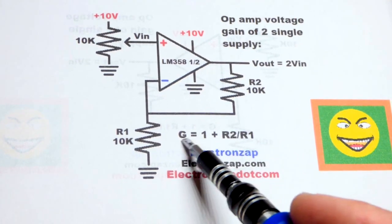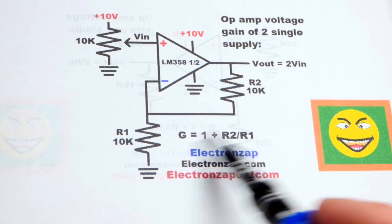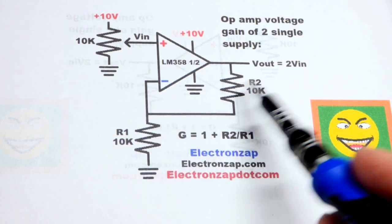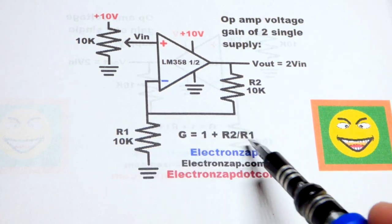The formula for this, the gain is one plus resistor two divided by resistor one. Since they're equal value, that makes the math easy. We end up with one, 10K divided by 10K is one.